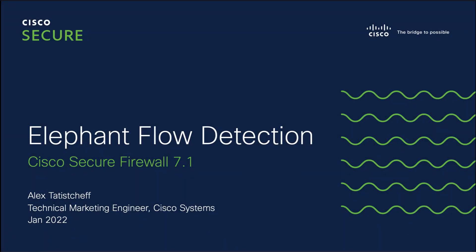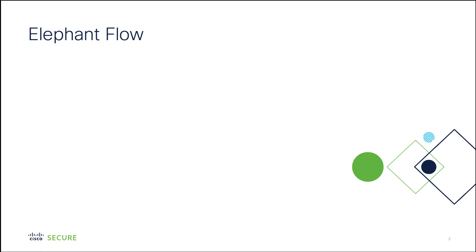Hello and welcome to this video on elephant flow detection in release 7.1 of the Cisco Secure Firewall. I'm Alex Satyshef, Technical Marketing Engineer with Cisco Systems. The new feature that is the subject of this video is called Elephant Flow Detection.